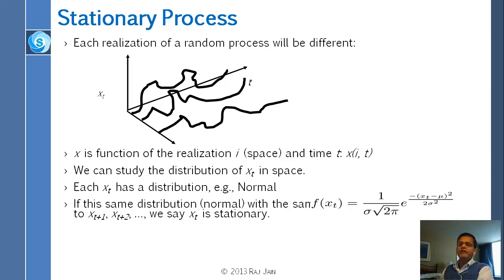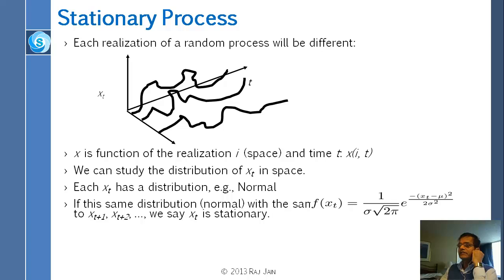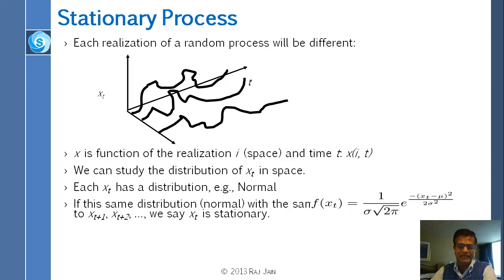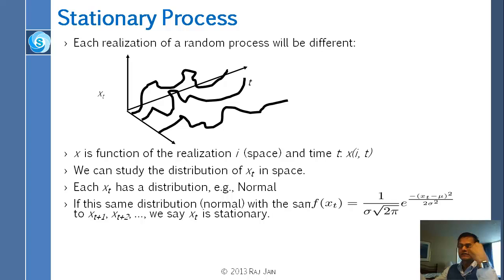Now I want to introduce the concept of a stationary process. Each random process, if you were to do another instance of it, would be totally different. Imagine a random process plotted as a function of time — one curve is one realization. In sensor networks, at one sensor you observe one process, at the second sensor another, and at the third sensor — for the same application or a different movie scene — you get a totally different sequence.